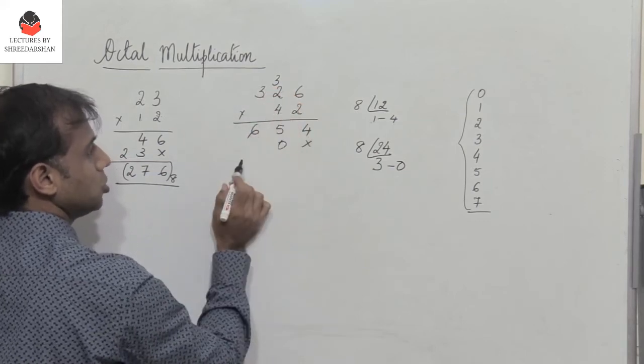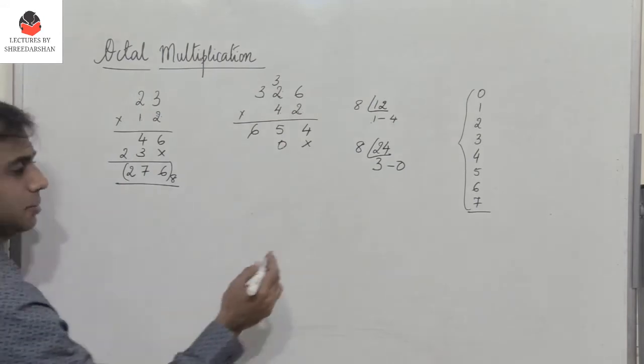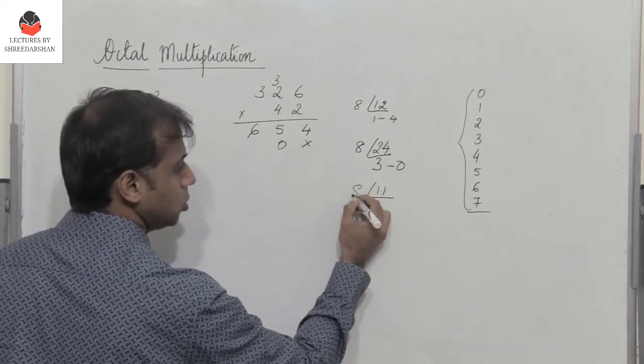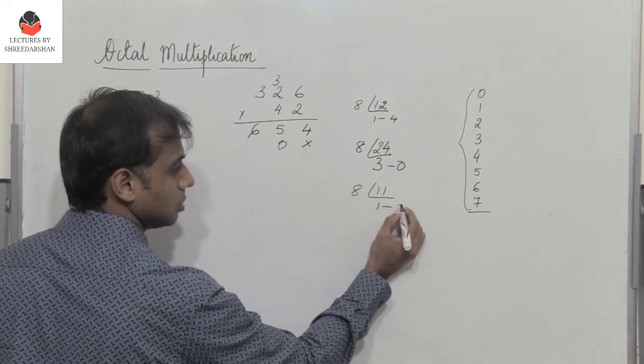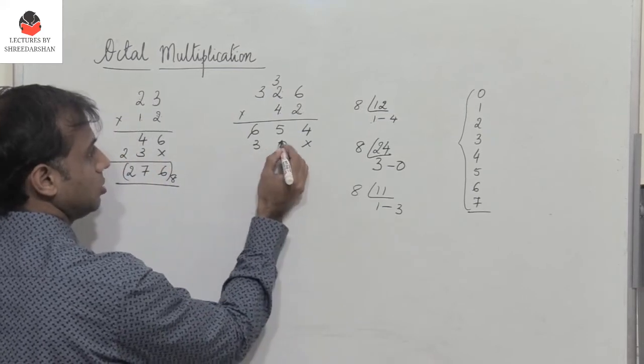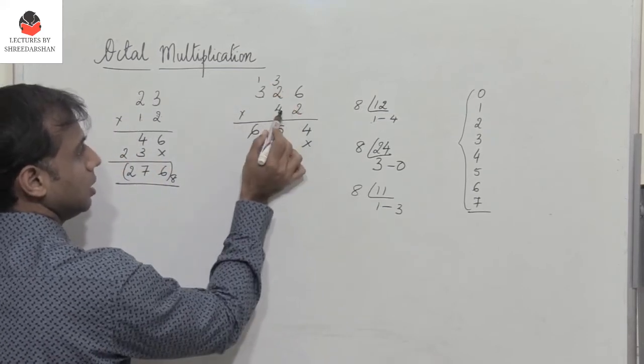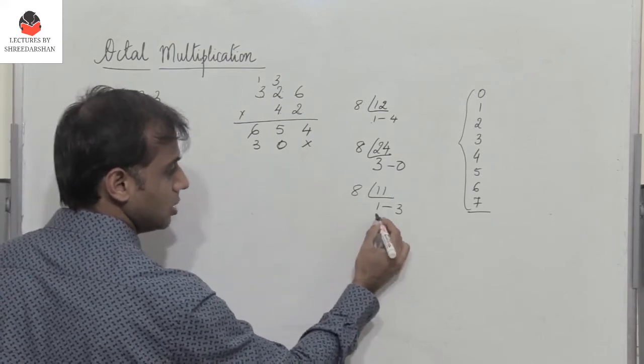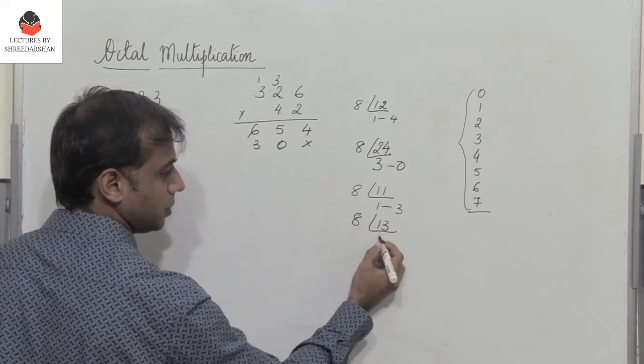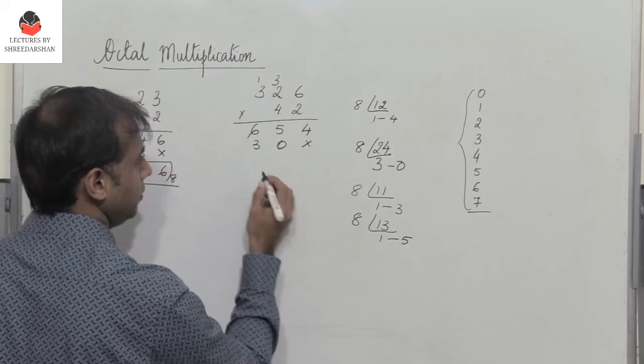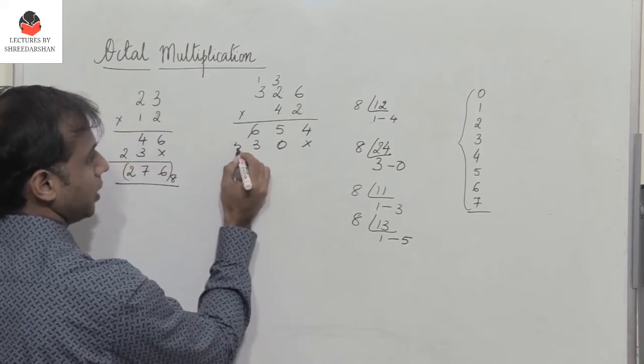Next, 4 into 2 is 8. 8 plus 3 is 11. So again convert 11 to octal. So you get 1 and 3, so you write 3 with 1 here. Again, 4 into 3 is 12 plus 1 is 13. So 13 divided by 8, so you get 15. So you have 5, 1.